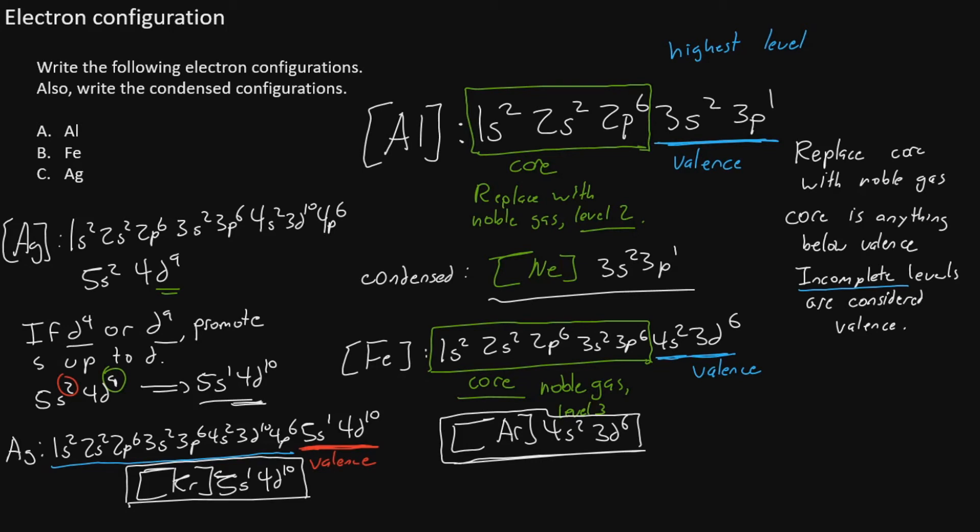This is how we write electron configurations. Be especially careful if you end on D4 or D9.